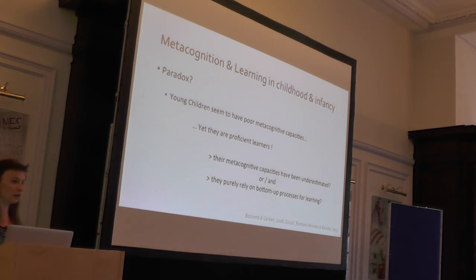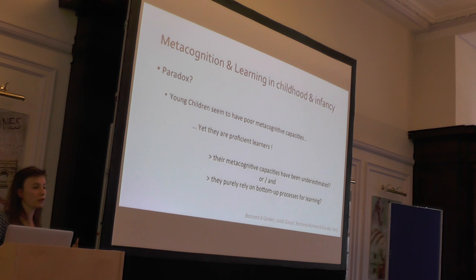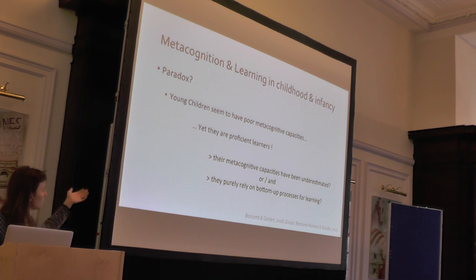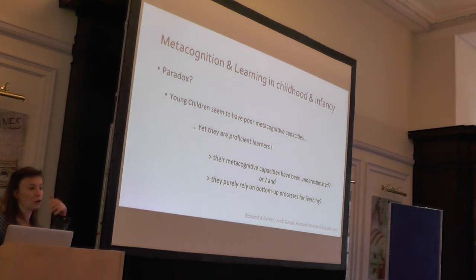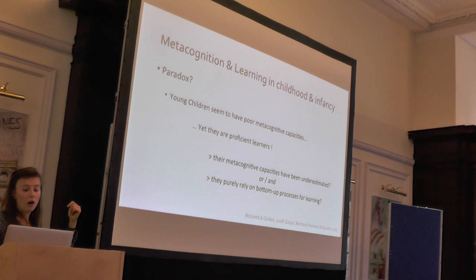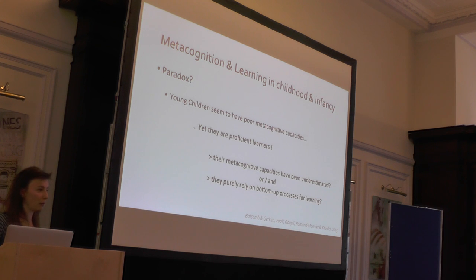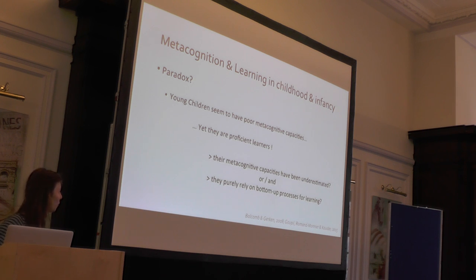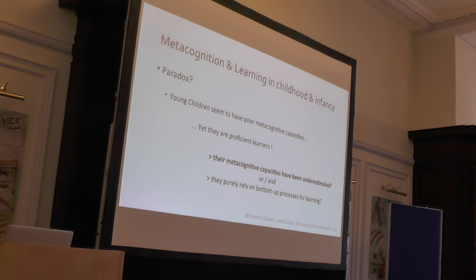There's a seeming tension between those two notions, and you could resolve this in two main ways. Perhaps children's metacognitive capacities have been underestimated, and they are actually able to monitor their own knowledge and use this for learning. Or perhaps they're only relying on purely bottom-up processes for learning - especially on social selectivity and mechanisms that Katrina and I have been talking about. But our feeling was that the first hypothesis is worth investigating.